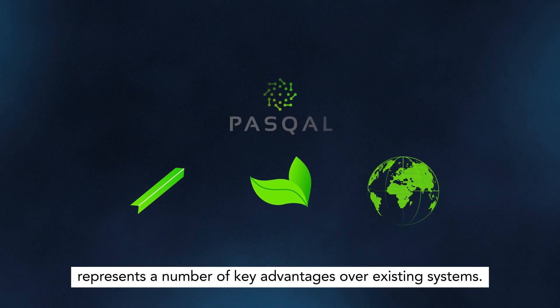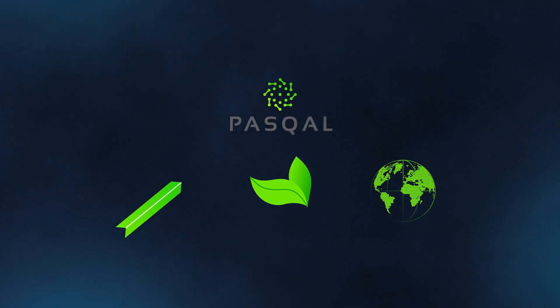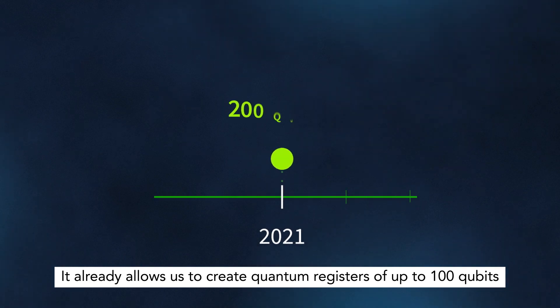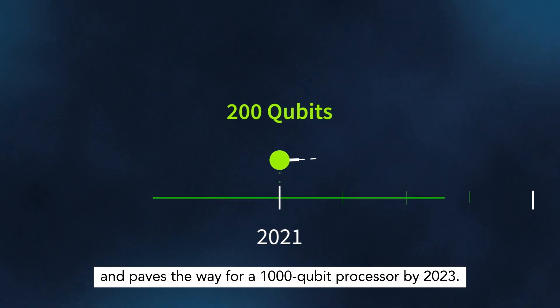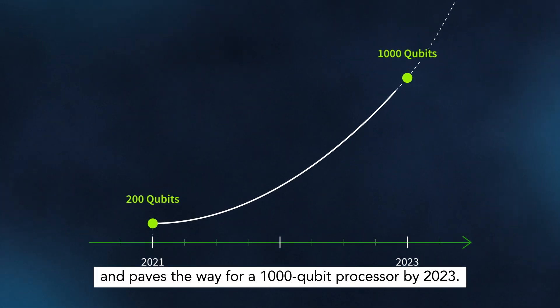It already allows us to create quantum registers of up to 200 qubits and paves the way for a 1,000-qubit processor by 2023.